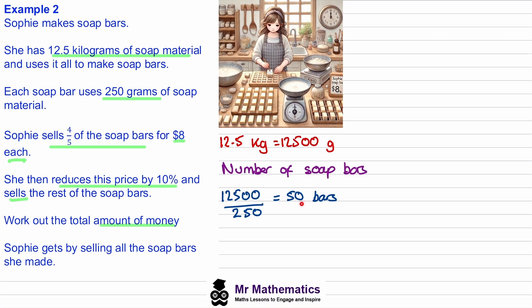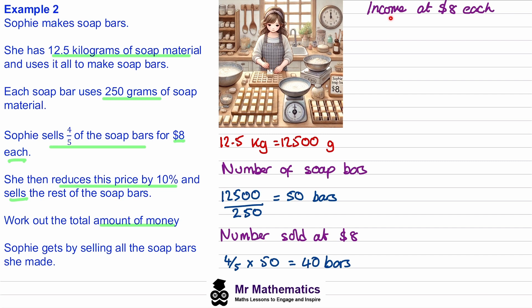She sells four fifths of them at eight dollars each, so we need to work out how many bars that is. Four fifths of 50: one fifth is 10, multiply by four and we get 40 bars. The total income at eight dollars each will be 40 bars multiplied by eight dollars, which gives us 320 dollars.